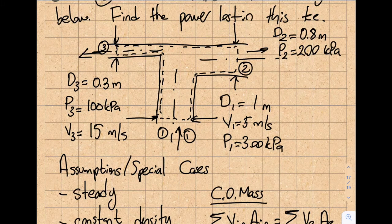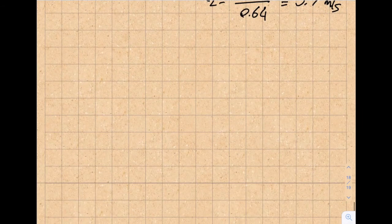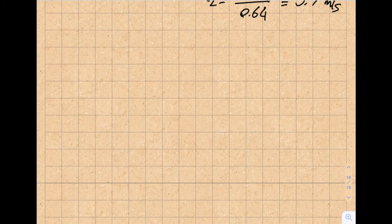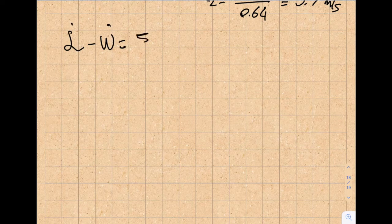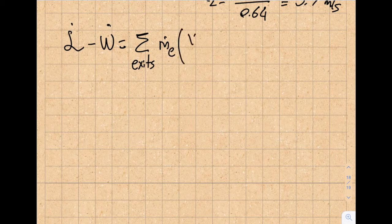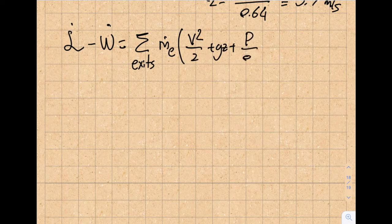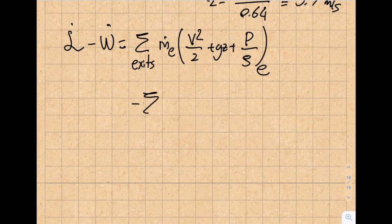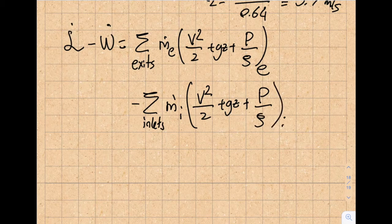Let me write the equation. We have an equation for that: L̇ minus Ẇ equals the sum over the exits of ṁ_exit times (v²/2 + gz + p/ρ) at the exits, minus the sum over the inlets of ṁ_inlet times (v²/2 + gz + p/ρ) at the inlets.